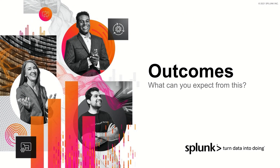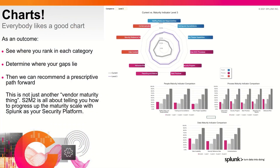Those are the things that make up maturity level one. But in terms of outcomes, what can we really expect from all of this? We've talked about this a little bit — everybody likes a good chart. This is where we'll come back and give you your maturity ranking. We'll help you identify where your gaps lie, the things that you're good at, the things that you're bad at. And then be able to recommend what that real prescriptive path forward actually looks like. Again, this is not just another vendor maturity thing — this is all about telling you how to progress up that maturity scale with Splunk as your security platform.